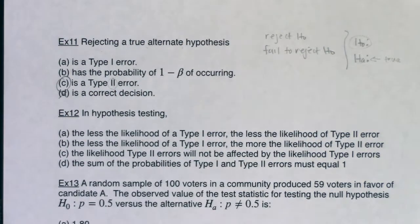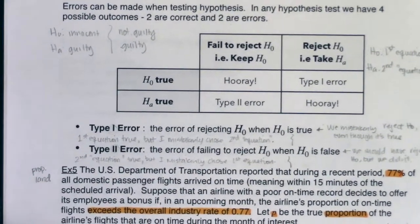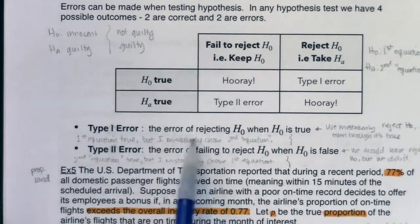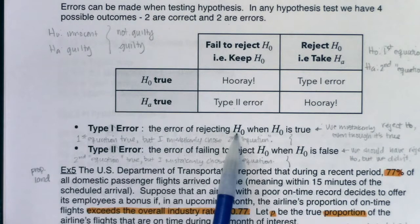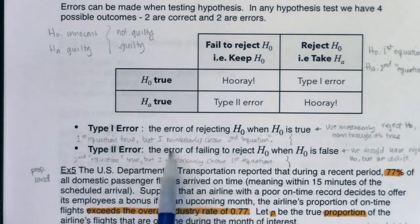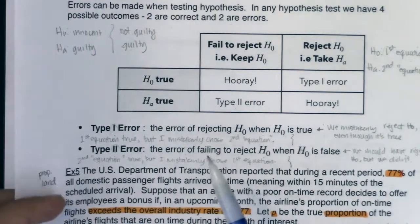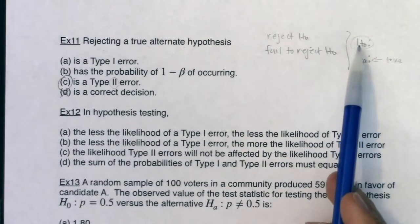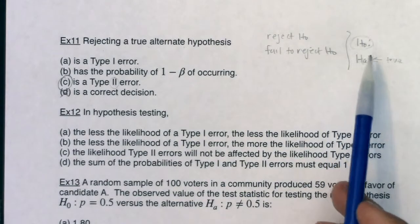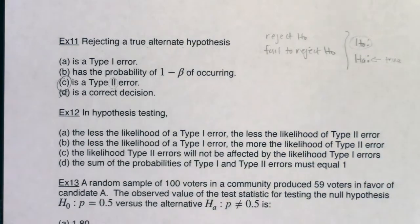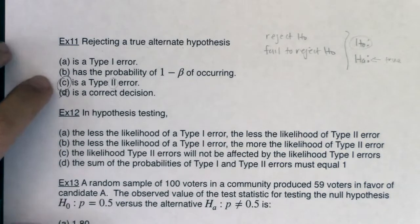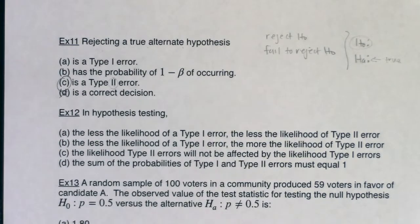Going back to how we originally defined errors: when you reject H-naught, you might make a type 1 error, and when you fail to reject H-naught, you might have made a type 2 error. Here, we failed to reject H-naught — another way of saying that is we kept H-naught — so we potentially made a type 2 error. That's the answer to this question.